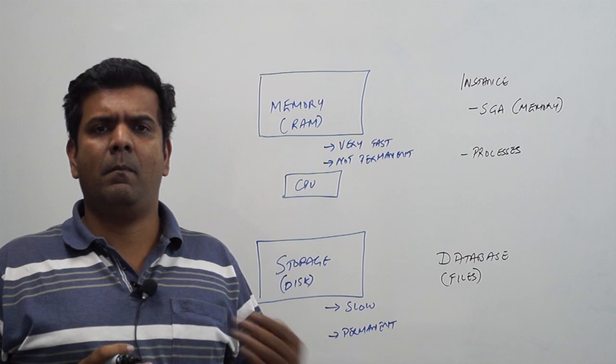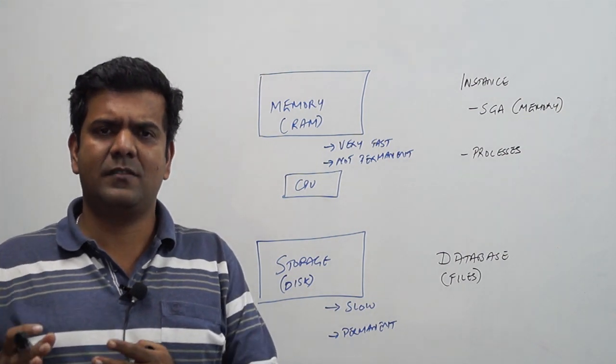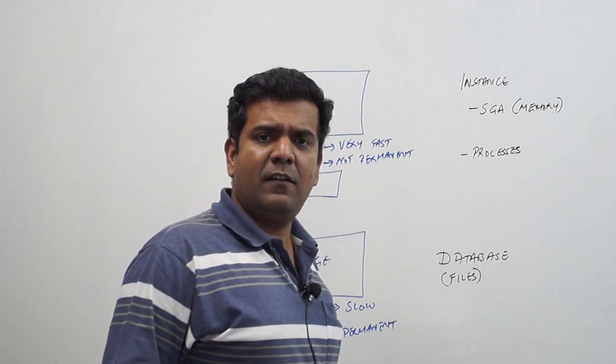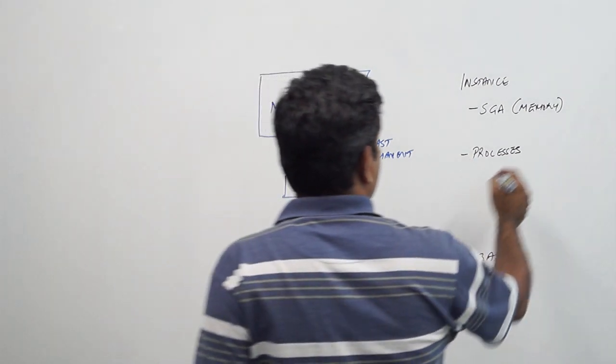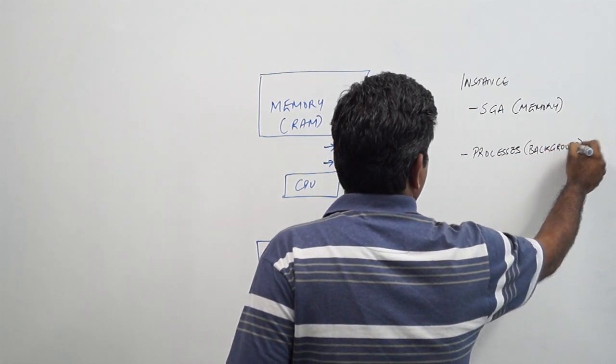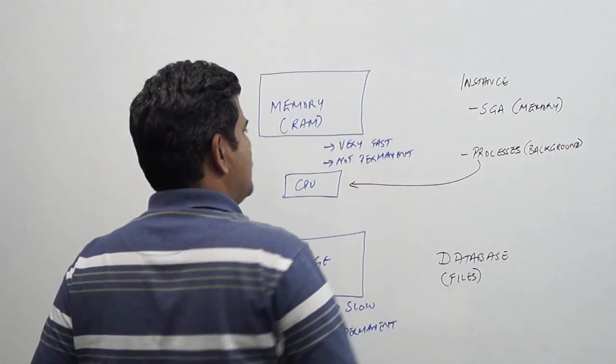The SGA is a memory allocation with various components like shared pool, buffer cache and other components. We will go into the details later. And there are a set of processes which are otherwise called background processes which are basically going to make use of the processor to do activity.